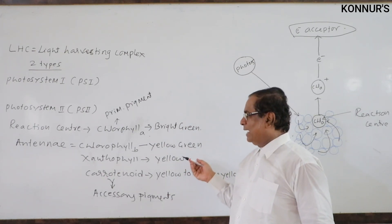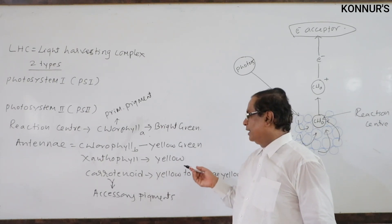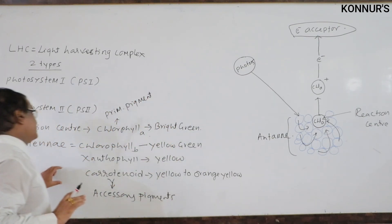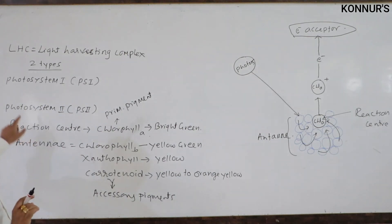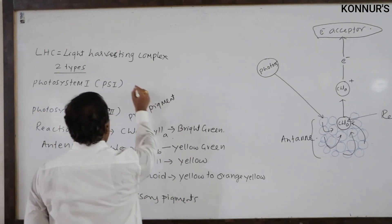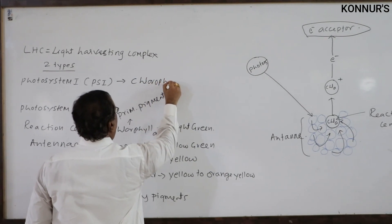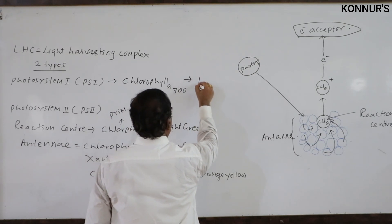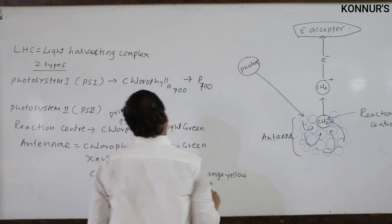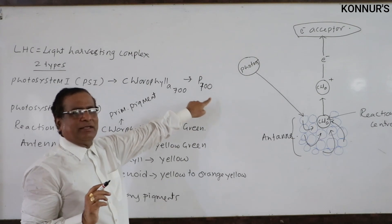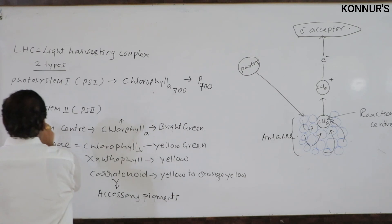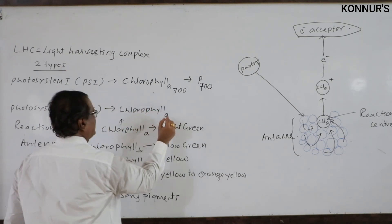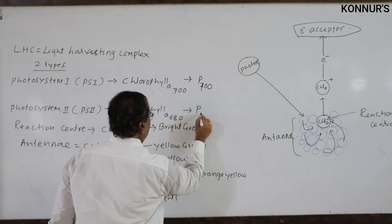Chlorophyll a is bright green in color, chlorophyll b is yellow-green, xanthophyll is yellow, and carotenoid is yellow to orange-yellow. An important point: in Photosystem I, the reaction center chlorophyll a is named chlorophyll a-700, also written as P700. In Photosystem II, the reaction center is also chlorophyll a, but it is named chlorophyll a-680, also written as P680.